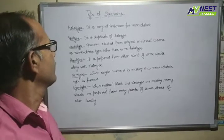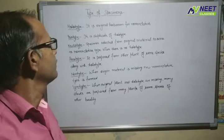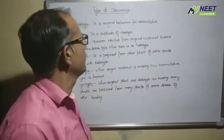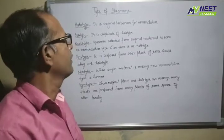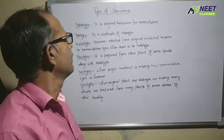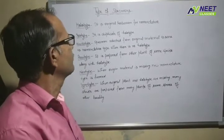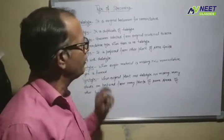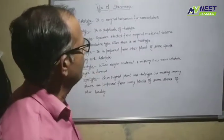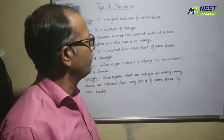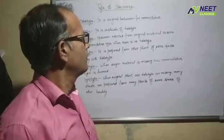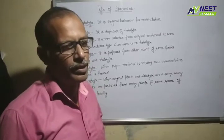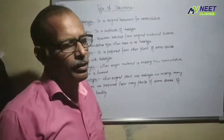Hi, I am Logik. A new topic starts: types of specimens, which belongs to the chapter 'The Living World.' Types of specimens is generally used for naming new plants. Botanical names or scientific names can be used for new plants.